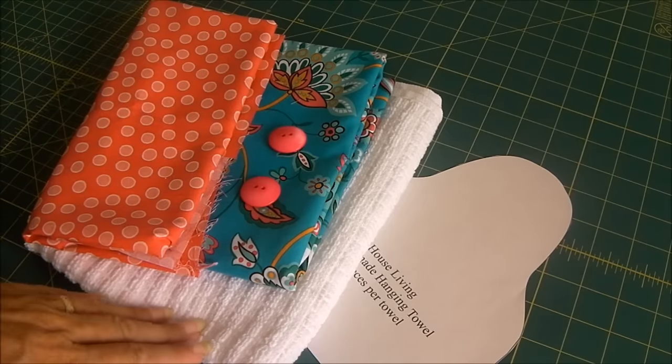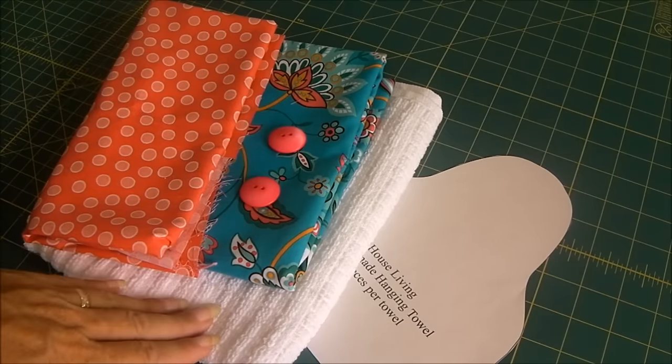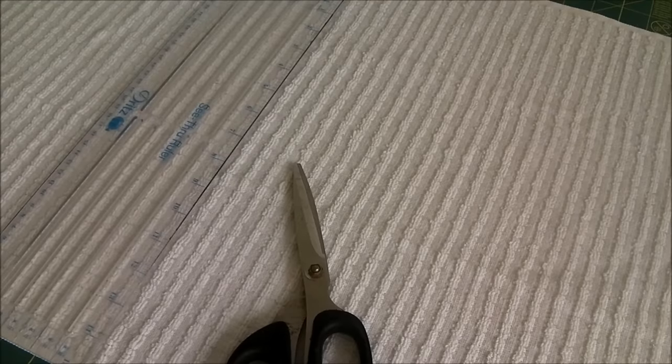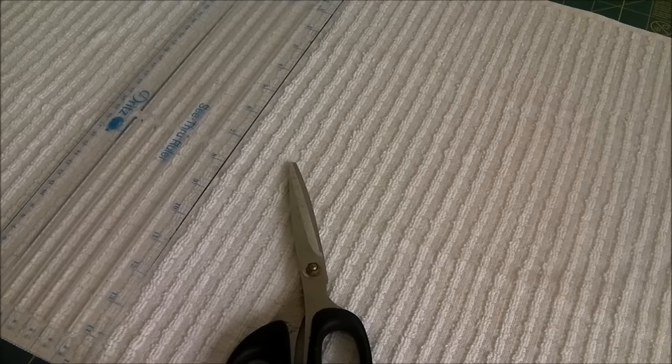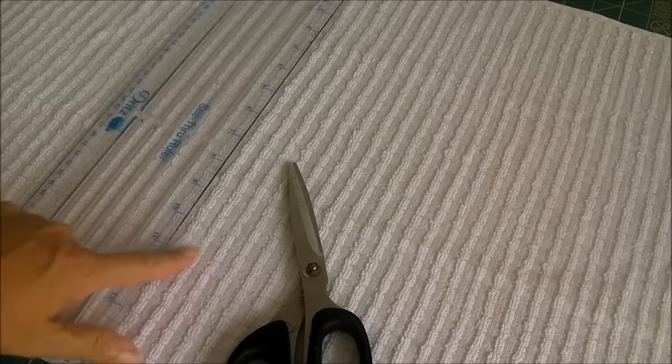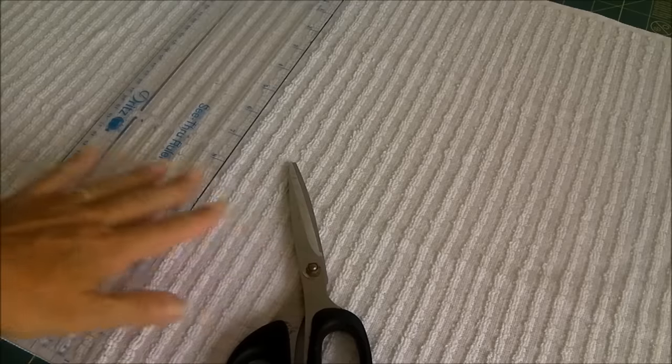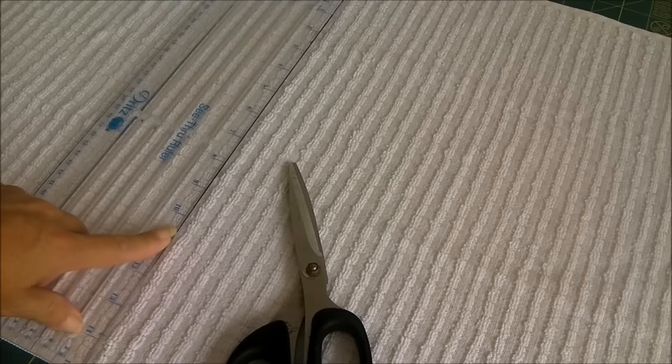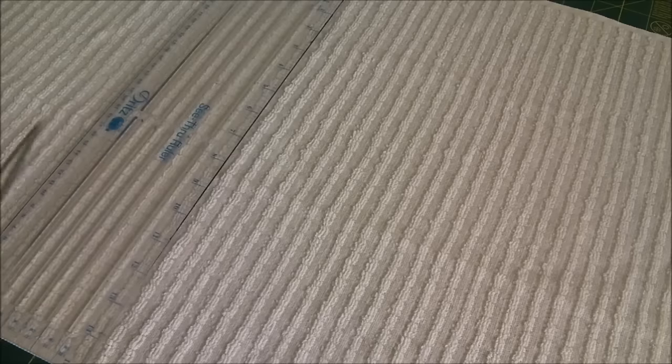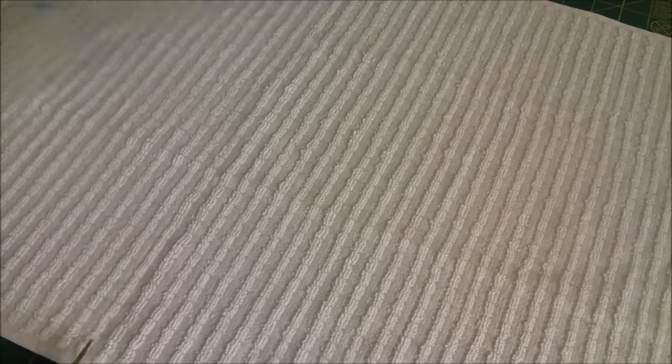So the first thing we're going to need to do is cut our hand towel in half. So my towel, once I've laid it out, I can see that it's got stripes. Often kitchen towels do. So I've just counted the stripes in from either end, marked where the centre of the towel is. I'm just going to take my scissors and just cut this straight across the middle.